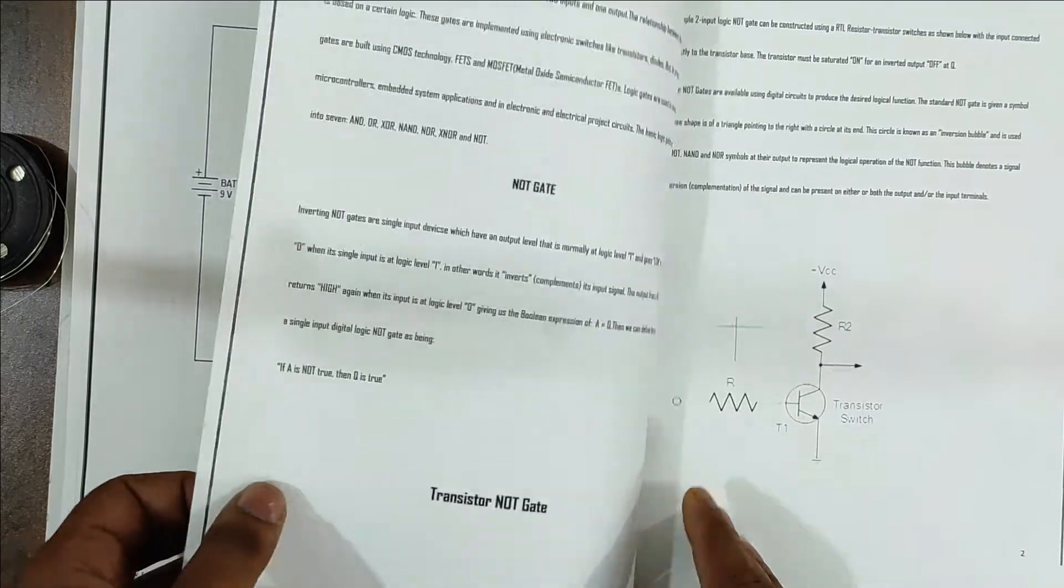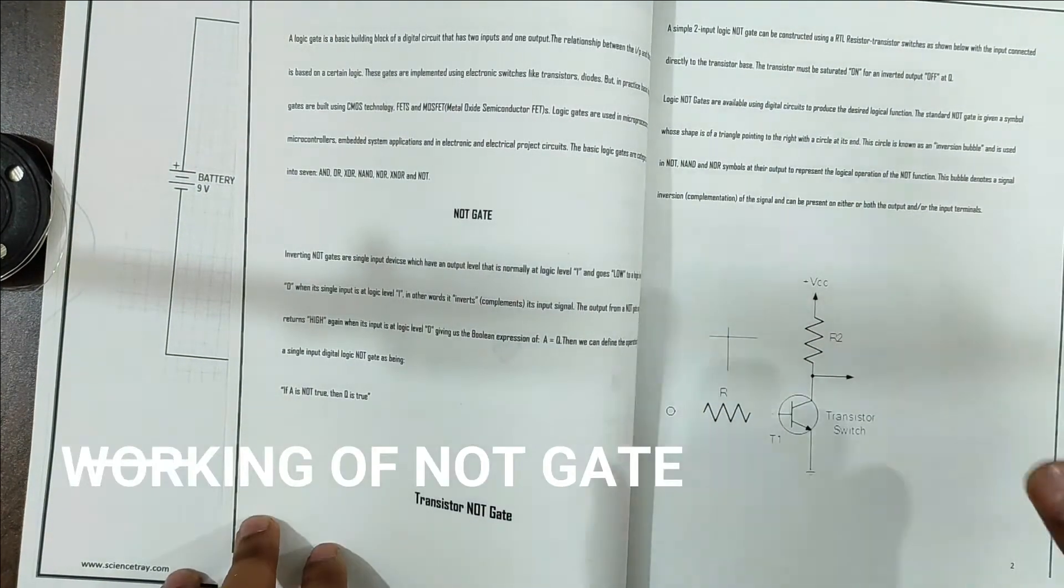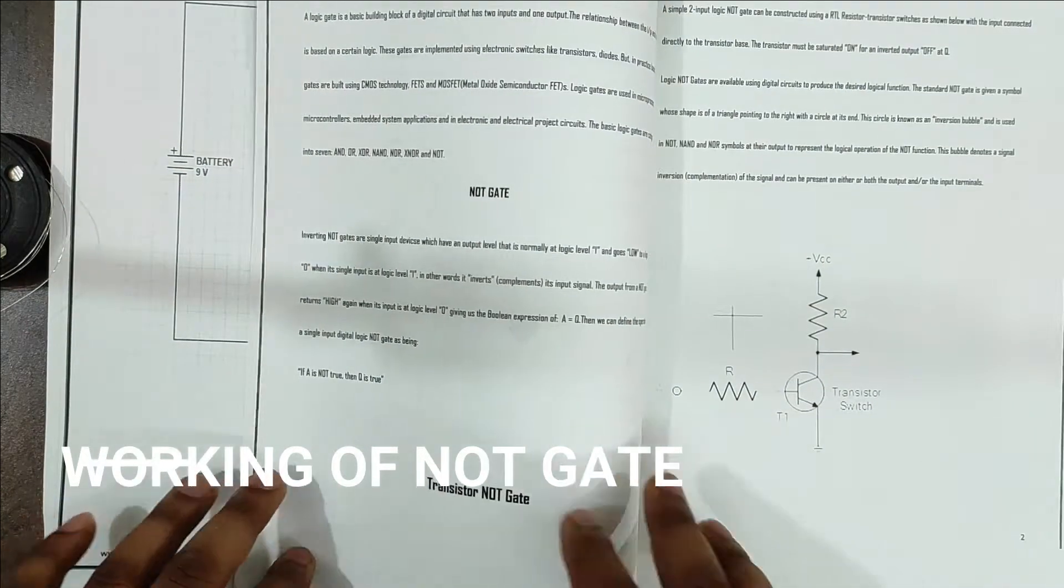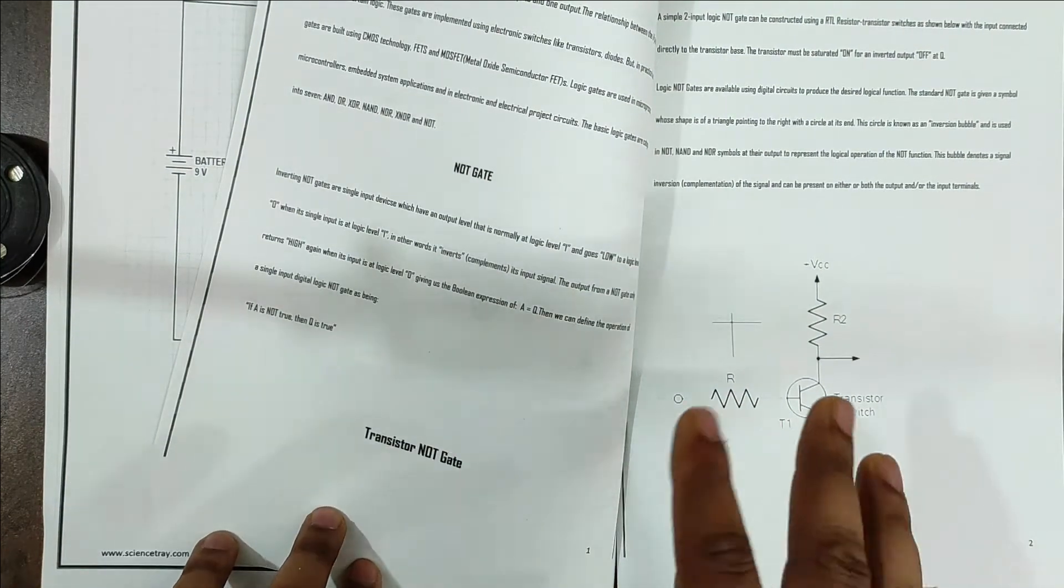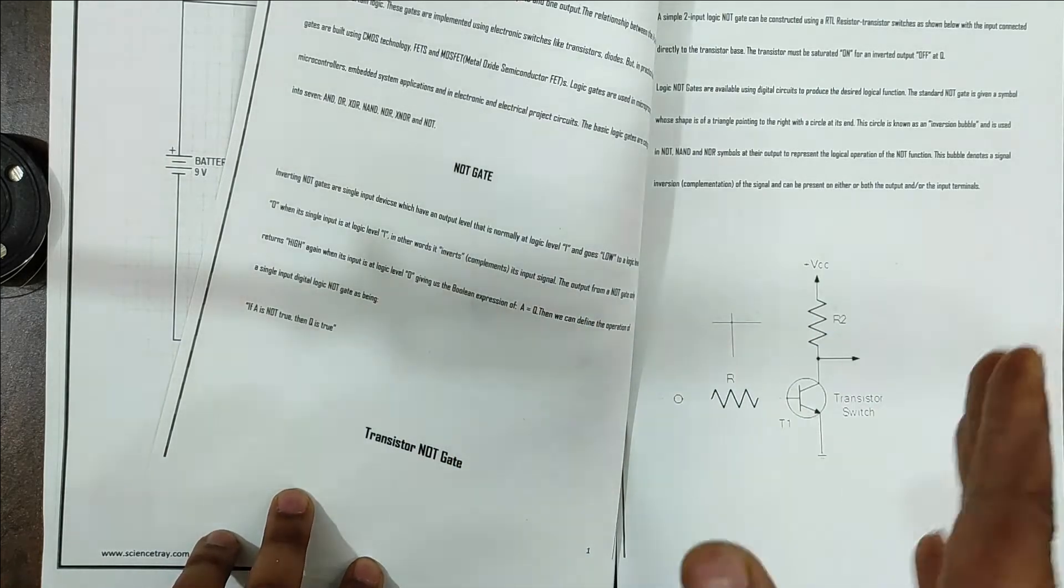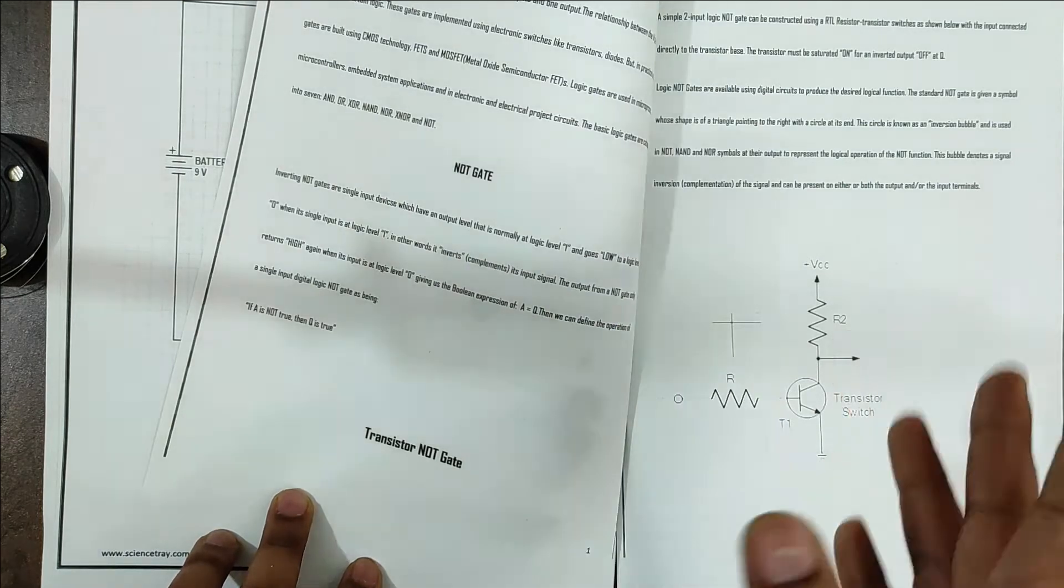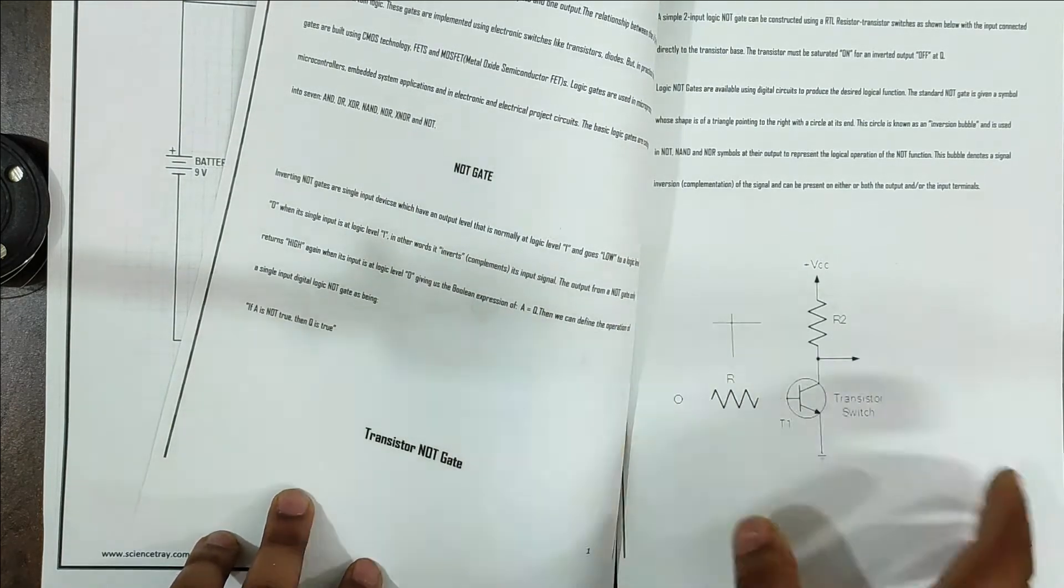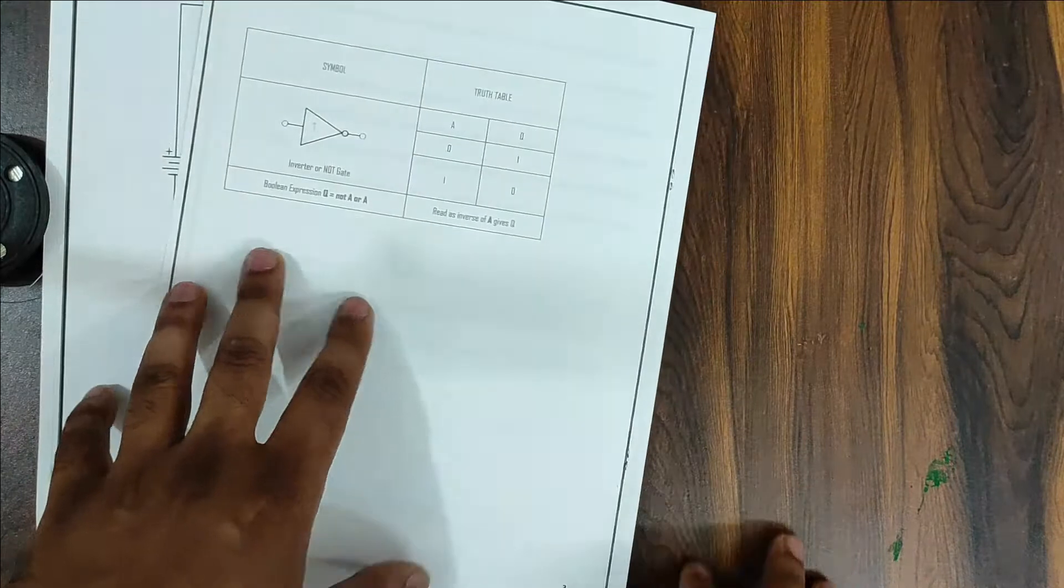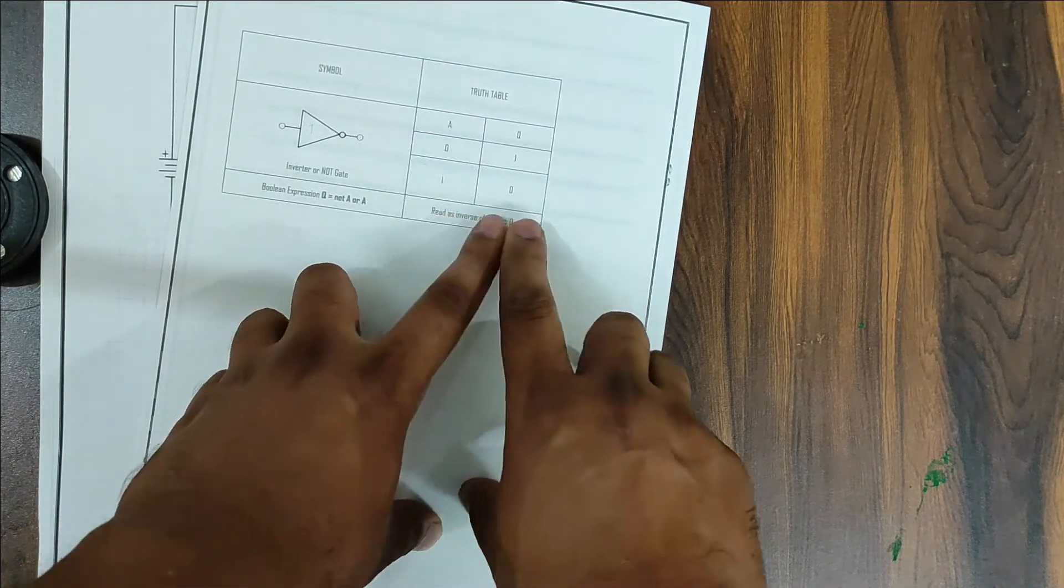Now we will see what is a NOT gate. It is an inverter gate, means it will invert our input signal. If our input signal is zero then our output will be high. If input is low then output will be high. If input is high then output will be low. Here is the truth table: if input is zero then output is one, and if input is one then output is zero.